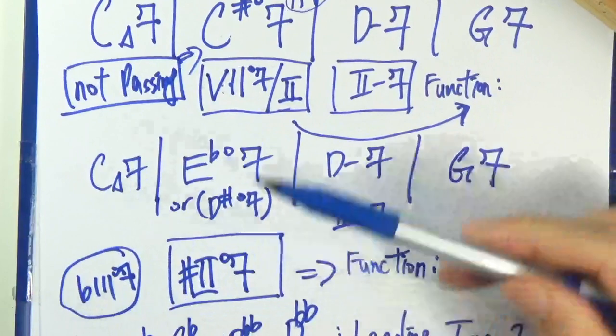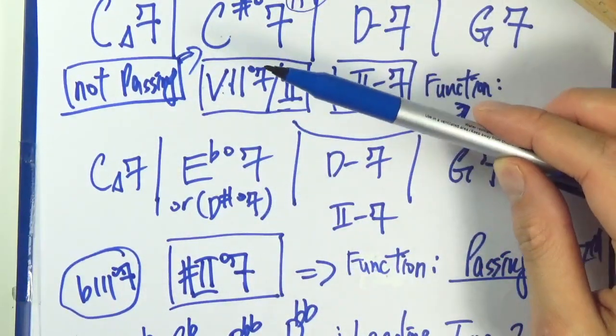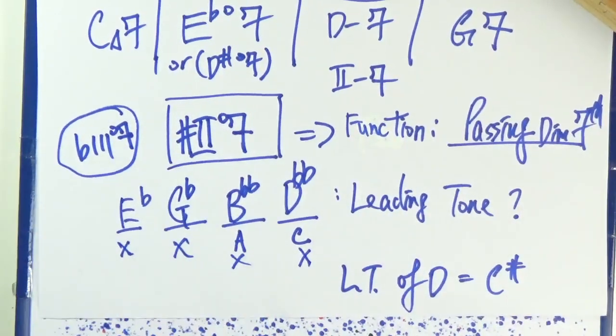Cool. So here's the major difference between these two types. Substitution for 5 and here we have a passing chord. So hopefully everything makes sense. We'll probably work out some exercises in the next video. See you there.